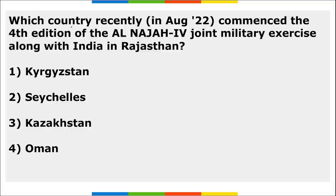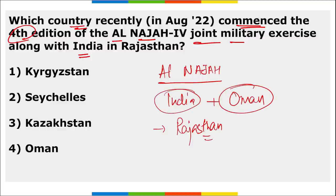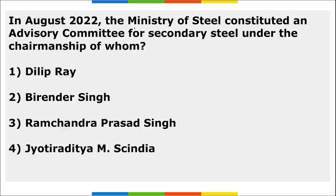Which country recently commenced the fourth edition of the Al-Najaf joint military exercise along with India? This exercise was conducted between India and Oman. It was conducted at the Majan Field Fighting Range in Rajasthan. The exercise was held from 1st to 13th of August. The correct option: it was between the armies of India and Oman.